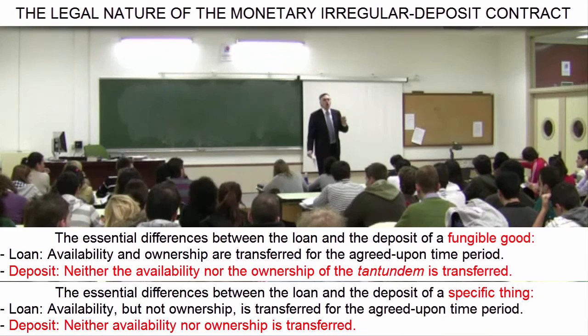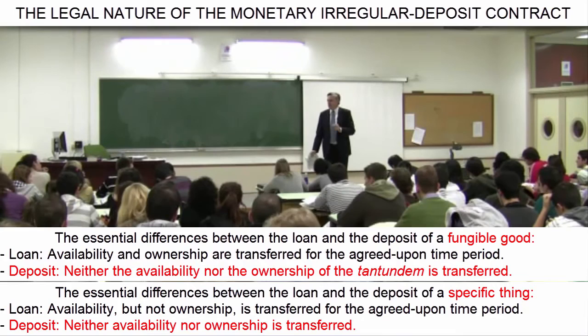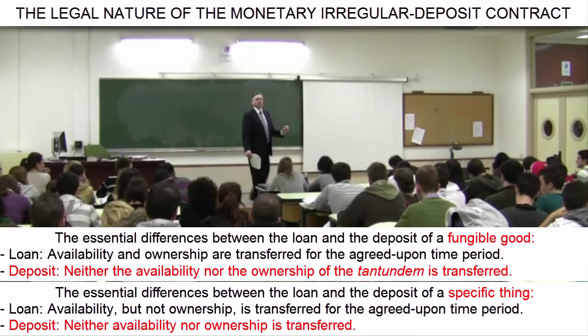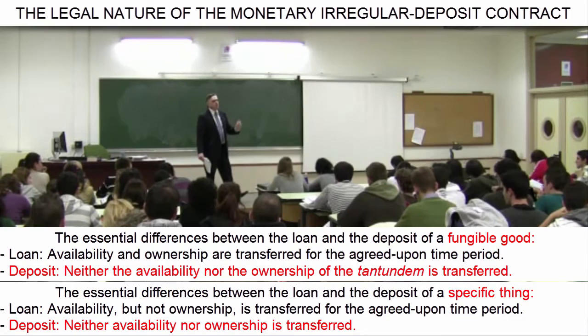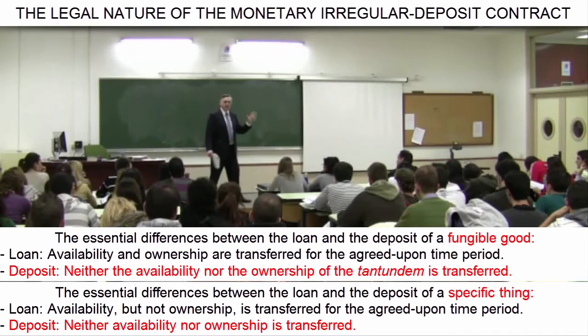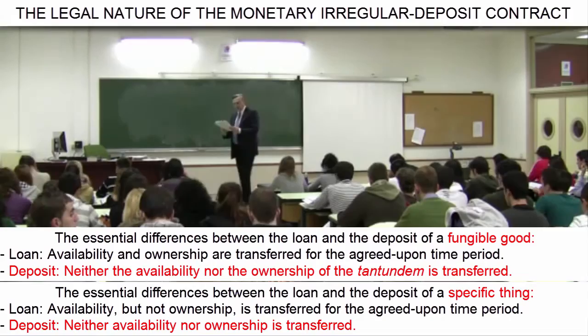It makes no difference which theory you accept. What is important is that you understand clearly that in the deposit, the availability of the item is never transferred to the depository who receives it. Instead, the depository receives it with instructions to keep and safeguard it, and to have it always at the disposal of the depositor. Whenever the depositor asks for it, the depository must return the equivalent in quantity and quality — in Latin, the tantundum — of what was deposited.